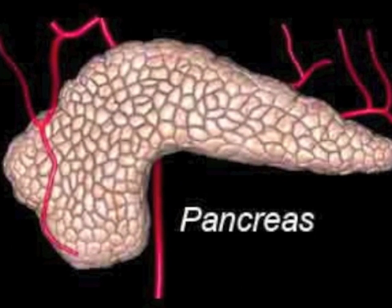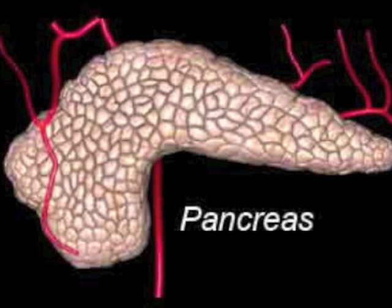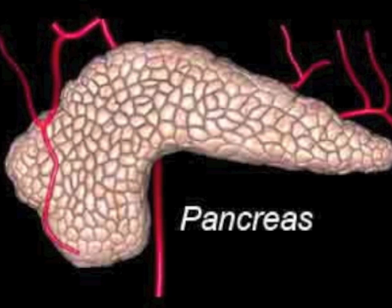Pancreatic juice is secreted by the pancreas and contains a mix of different enzymes. It contains pancreatic amylase, which helps digest carbohydrates, and pancreatic lipase, which helps digest different lipids such as triglycerides.